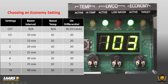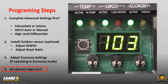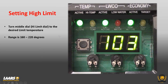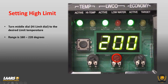Lastly, set your desired high limit using the middle dial. The high limit range is from 160 to 220 degrees and adjusts in one-degree increments. In this example, I'm showing 190 degrees — turn it again and it goes to 200. This is not a manual limit; it is an auto limit. At 200 degrees the boiler shuts off, and with the default 30-degree differential, at 170 degrees it would refire.